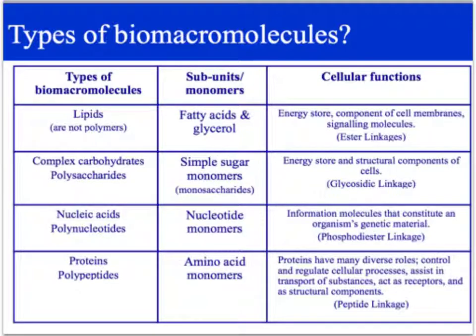Another type: complex carbohydrates or polysaccharides — poly meaning many, saccharide meaning a sugar. The subunit or monomer in this instance is simple sugars — your monosaccharides, mono meaning one, saccharide meaning a sugar. The function of sugars is energy storage and the structural components of cells. When you think of cellulose in plants' cell walls, that's a structural component. They're joined together through glycosidic linkage — glyco meaning glucose, linkage meaning to join.